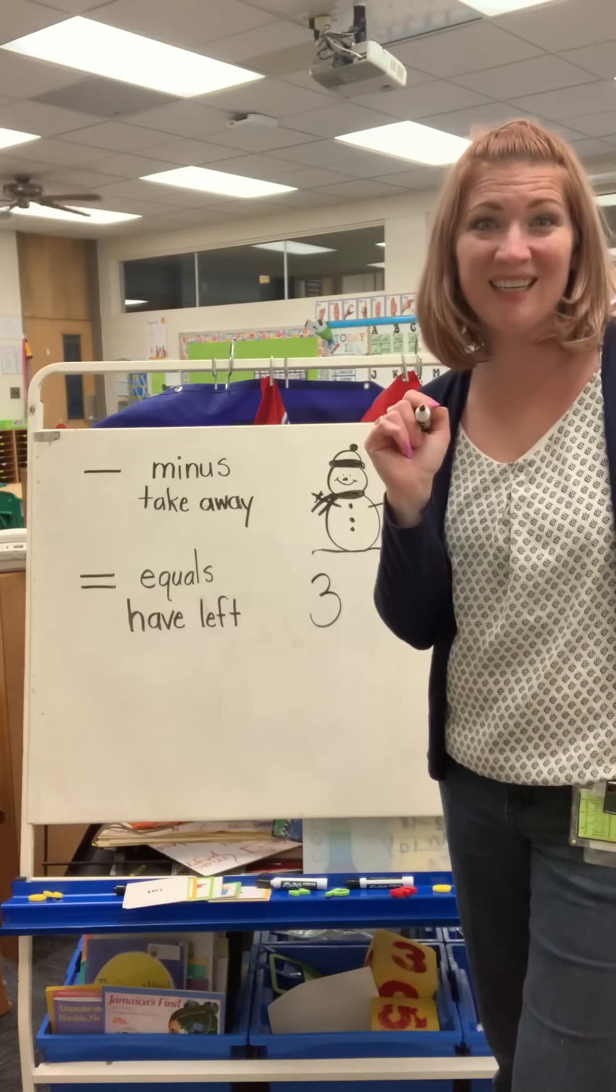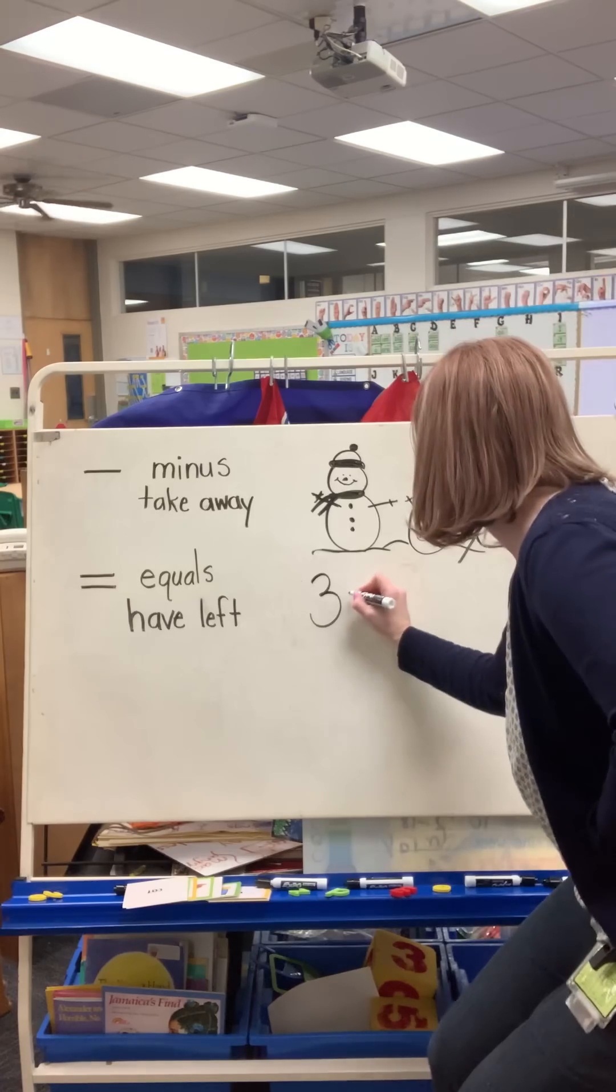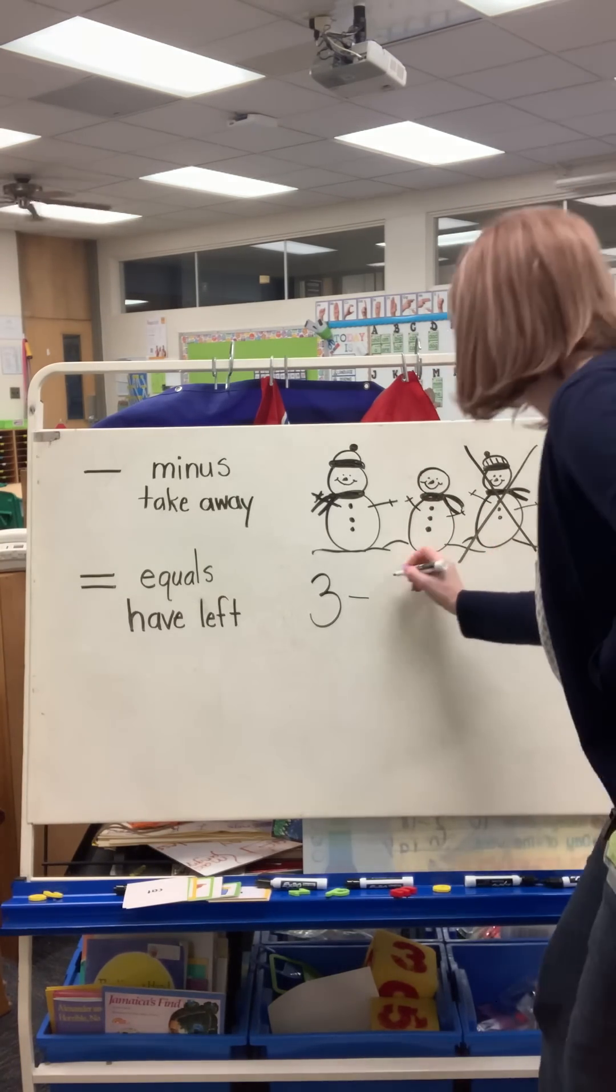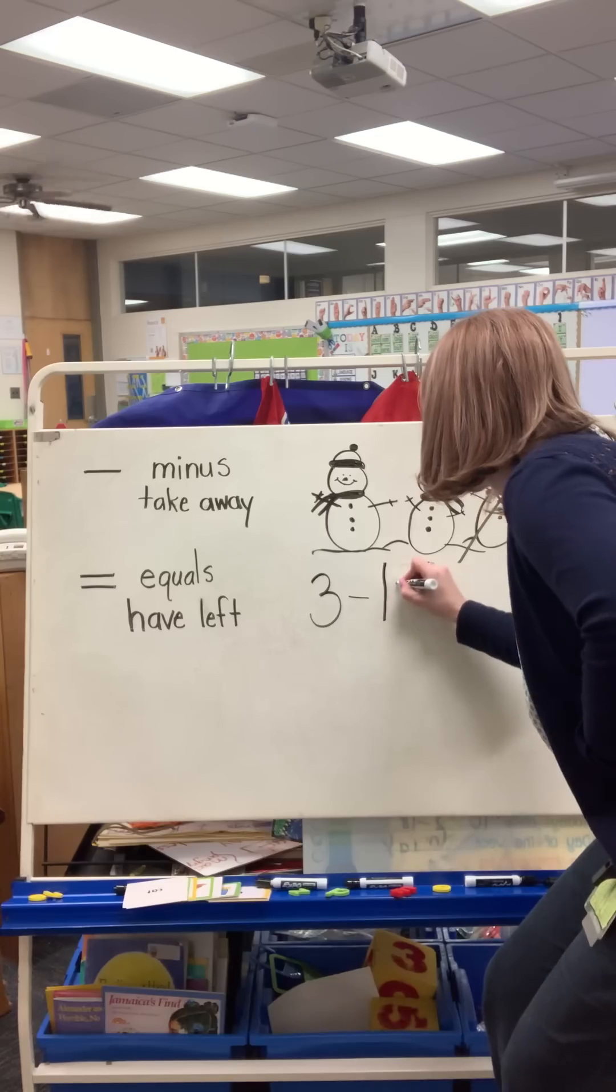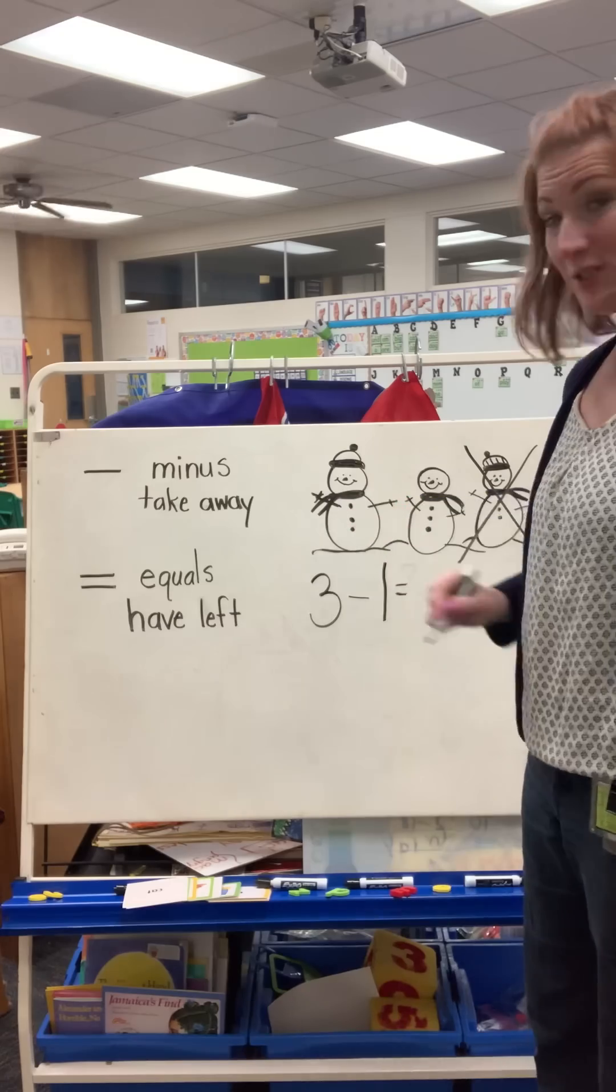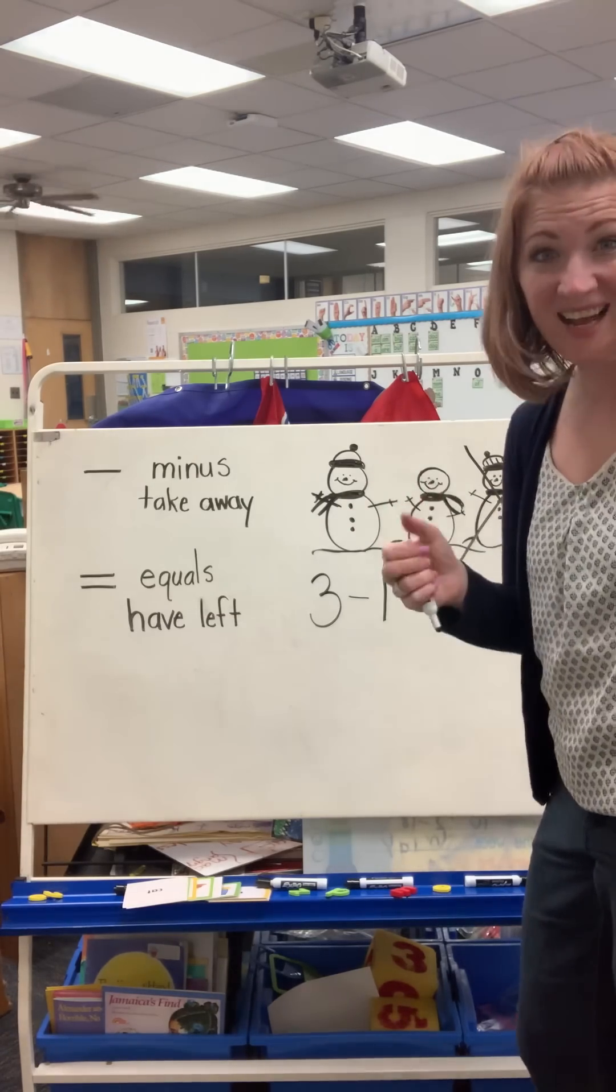One melted. So I'm going to use my minus symbol. One, to show the one that melted or the one that went away. How many snowmen do I have left? Great. I have two.